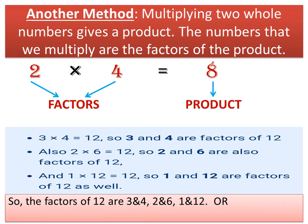But always write the factors in ascending order. So the factors of 12 are 1, 2, 3, 4, 6, and 12.